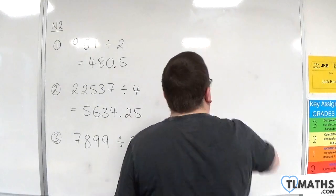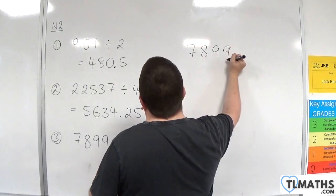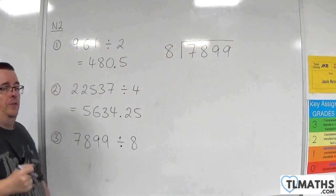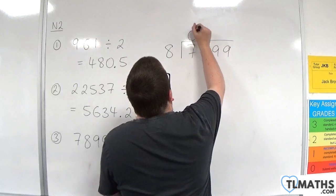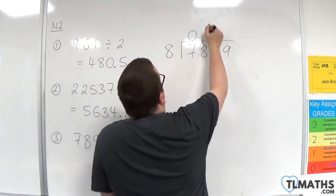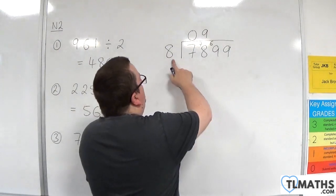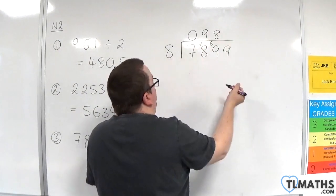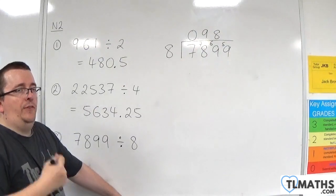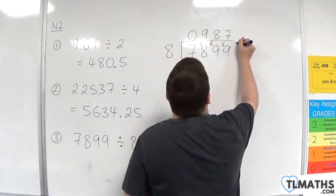Last one. We have 7,899 divided by 8. So first of all, 8's into 7 go 0 with 7 remainder. 8's into 78 go 9 because 8 nines are 72 with 6 left over. 8's into 69 go 8. 8 eights are 64 with 5 left over. Then 8's into 59 go 7. 8 sevens are 56 with 3 left over.